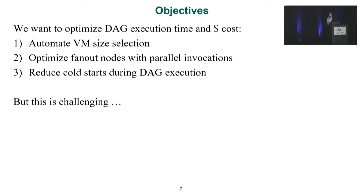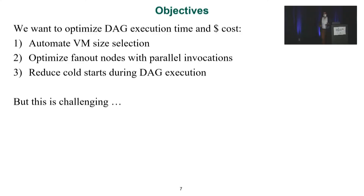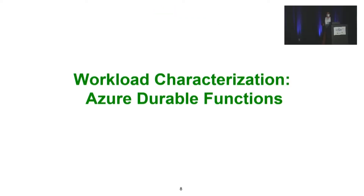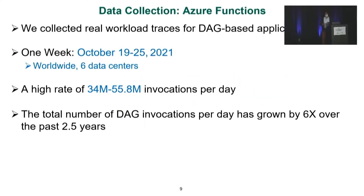What we want to do is optimize the DAG execution time and cost. To do this, we have three tasks: first, automate the VM selection process; second, optimize the fanout nodes with parallel invocations; and third, reduce cold starts during DAG execution. However, this is challenging, as we will see from our workload characterization on Azure Durable Functions.